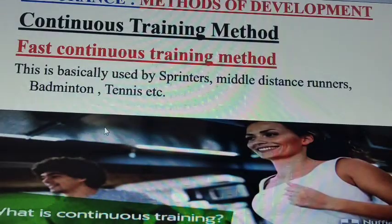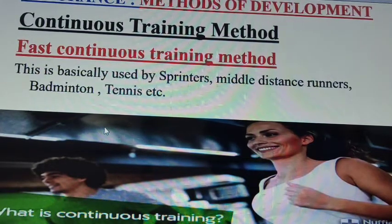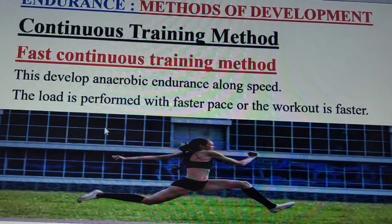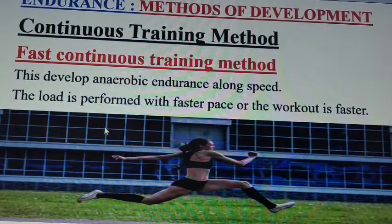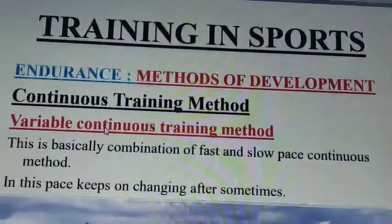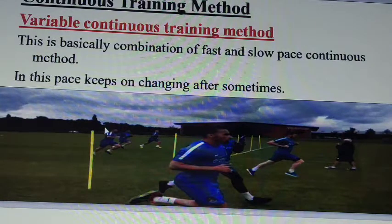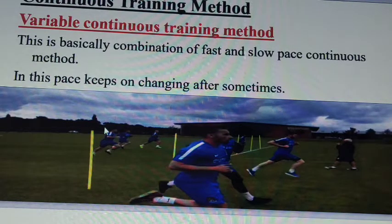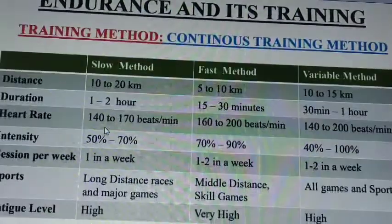Fast continuous training method is basically for sprinters and middle-distance runners — badminton and tennis are good examples. It helps to develop anaerobic endurance along with speed. The workout is performed at a faster pace with high speed and shorter time. Variable continuous training method is a combination of fast and slow pace; the pace keeps changing after some time — sometimes slow, sometimes fast.